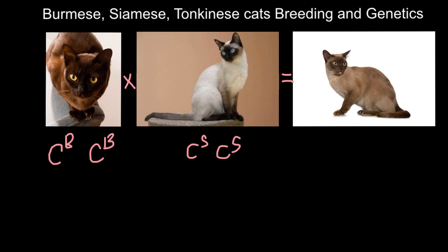If we cross Burmese and Siamese, on the genetic level, we would get two alleles for this locus. One would be C^B and another would be C^S. Because these two alleles are co-dominant, the color of the Tonkinese would be intermediate between these two.